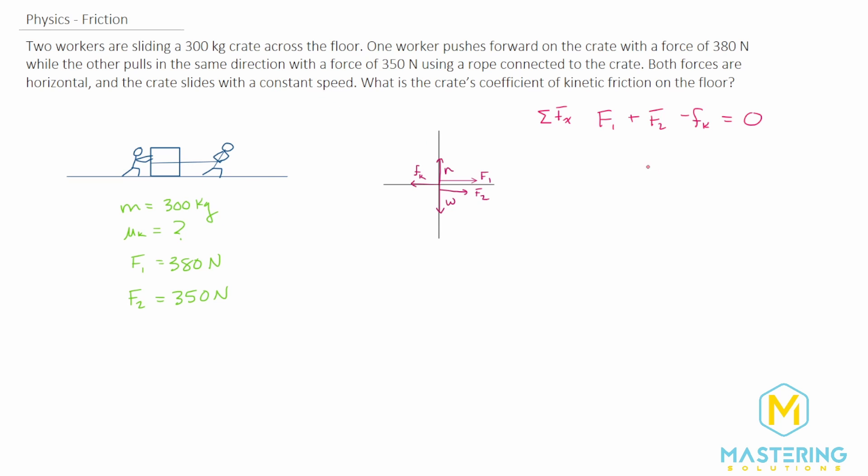We want to solve for the kinetic friction. F1 plus F2 equals the kinetic friction, and kinetic friction equals mu sub k times n. So F1 plus F2 equals mu sub k times n. Dividing both sides by n, mu sub k equals F1 plus F2 divided by the normal force, which is mg.